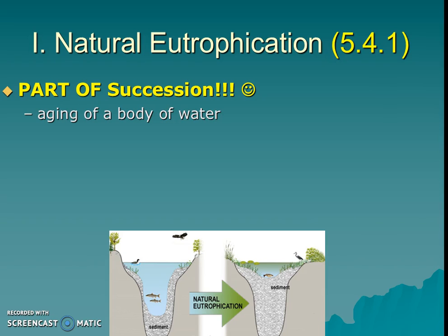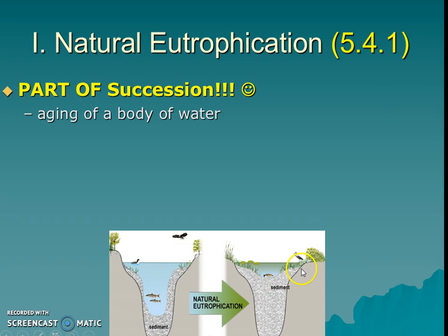Over time, a big lake or stream will end up getting sediment, and that sediment will fill with dead and decaying organisms and debris, and will slowly fill up to be a marsh and eventually a meadow. That's natural eutrophication.